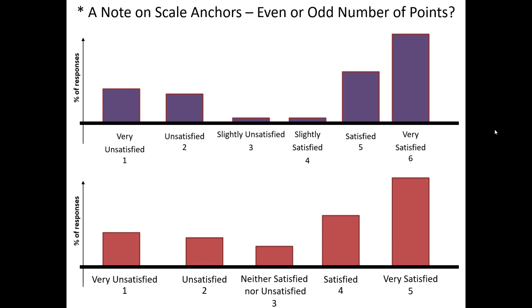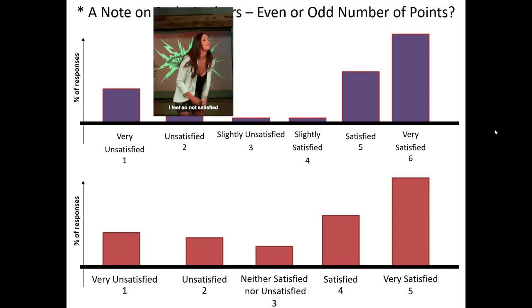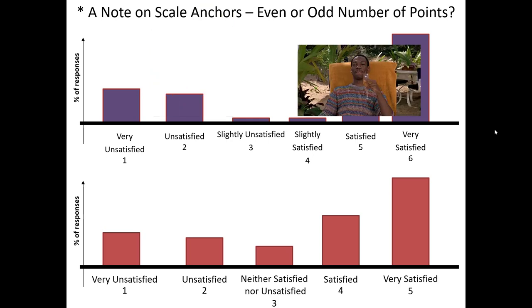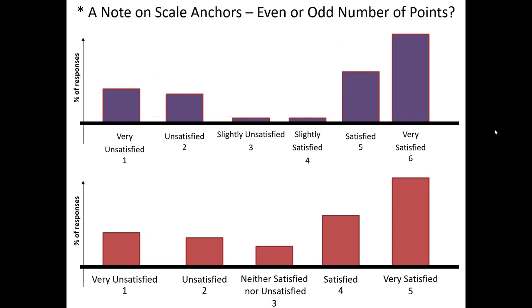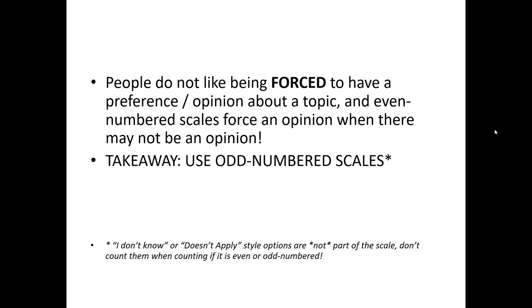Another question is whether we should have an even or odd number of scale points. We have the same fully-labeled setup as before, but above we now have an even number of scale points — 1 to 6. The difference in results is mostly in interpretation. If we take the results above literally, everybody is either unsatisfied or satisfied to some degree. Whereas in the odd-numbered option at the bottom, people can be neutral or ambivalent — neither satisfied nor unsatisfied. It's important to keep in mind that people do not like being forced to have an opinion when they really don't have one. Therefore, even-numbered scales are generally considered inappropriate for marketing research. We almost always use odd-numbered scales when we measure intensity.